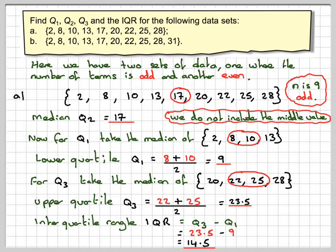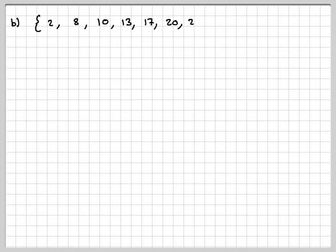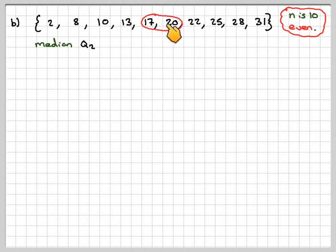Sometimes there's a lot of confusion in trying to find Q1 and Q2. Now if n is even, like in the second case, so we've added one extra number, 31. Then again, n is even, 10 numbers. So the median, you take the middle values, there's 2 now, 17 plus 20, divide by 2 and you get 18.5. That's straightforward.